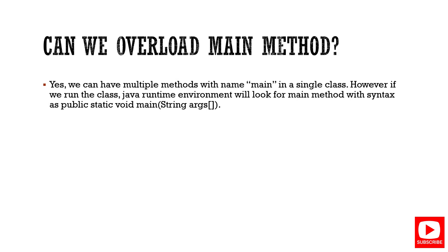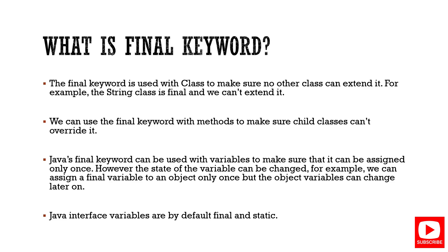Next question: can we overload the main method? Yes, we can have multiple methods named main. However, even if many main methods exist, the JVM specifically looks for the public static void main(String[] args) signature as the entry point from which the program executes.